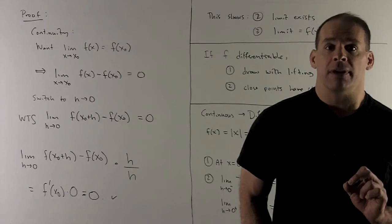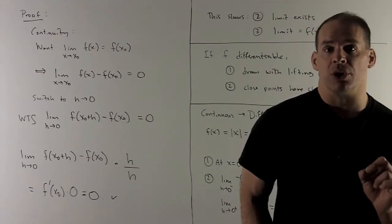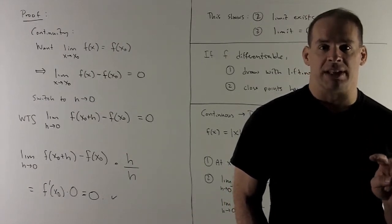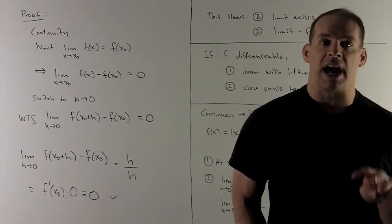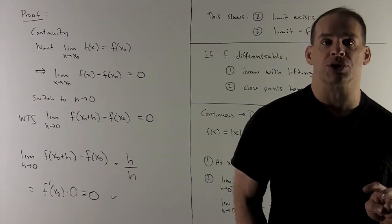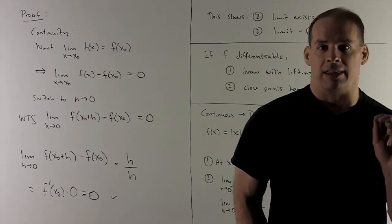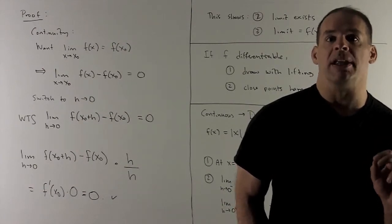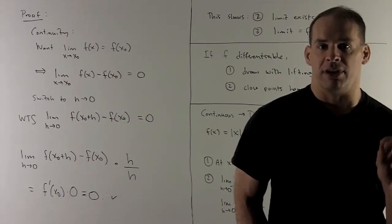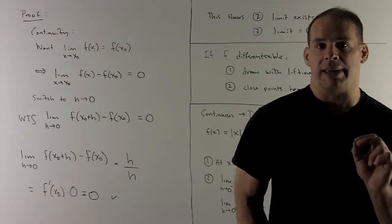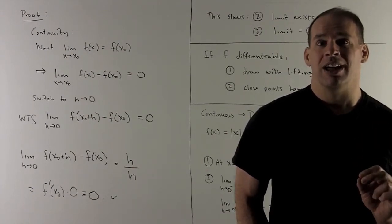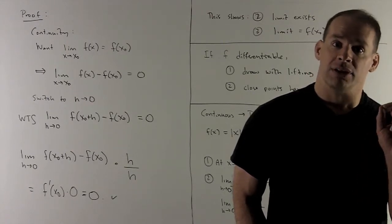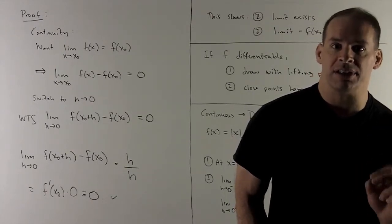The h by itself, as h goes to zero, goes to zero. Since both limits exist, we can take the limit of each factor separately and then multiply. Because f is differentiable, that limit is a finite number — not infinite — so we have a number times zero, which equals zero. That's exactly what we needed to show: differentiable at x₀ implies continuous at x₀.